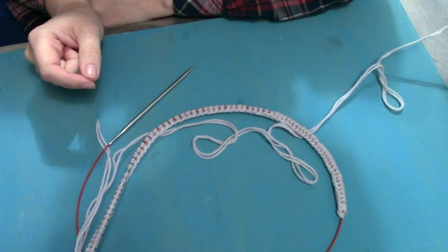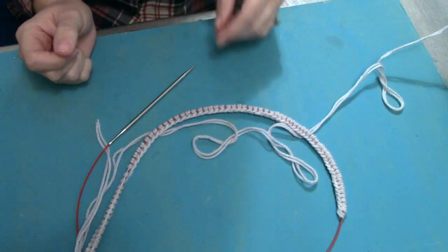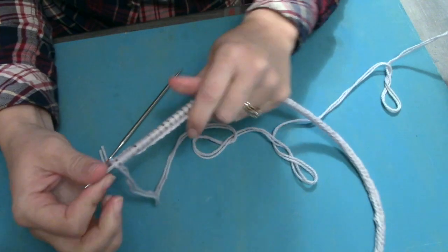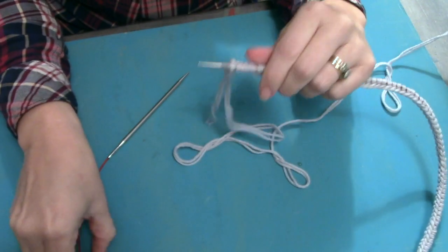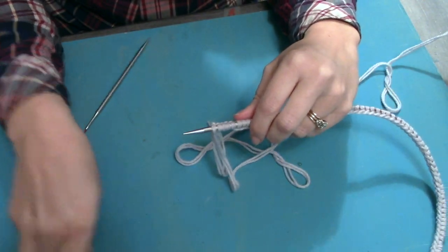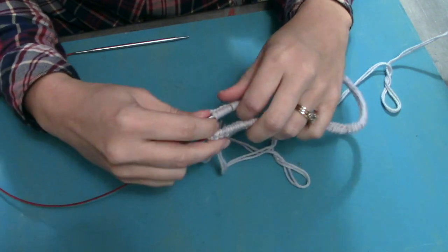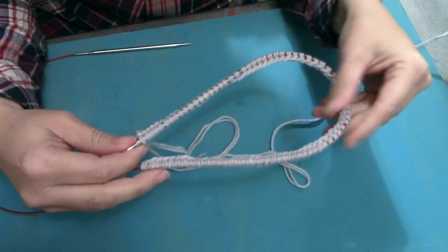This is how I join in the round for magic loop and this is how all my patterns are written. If I've written a pattern for joining in the round for magic loop, this is how I've adapted the stitches.